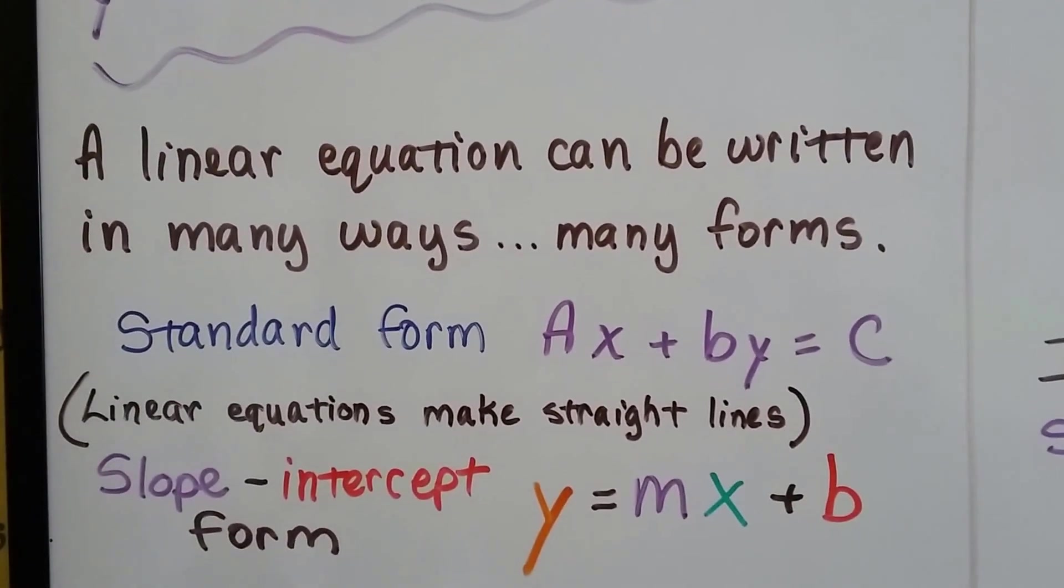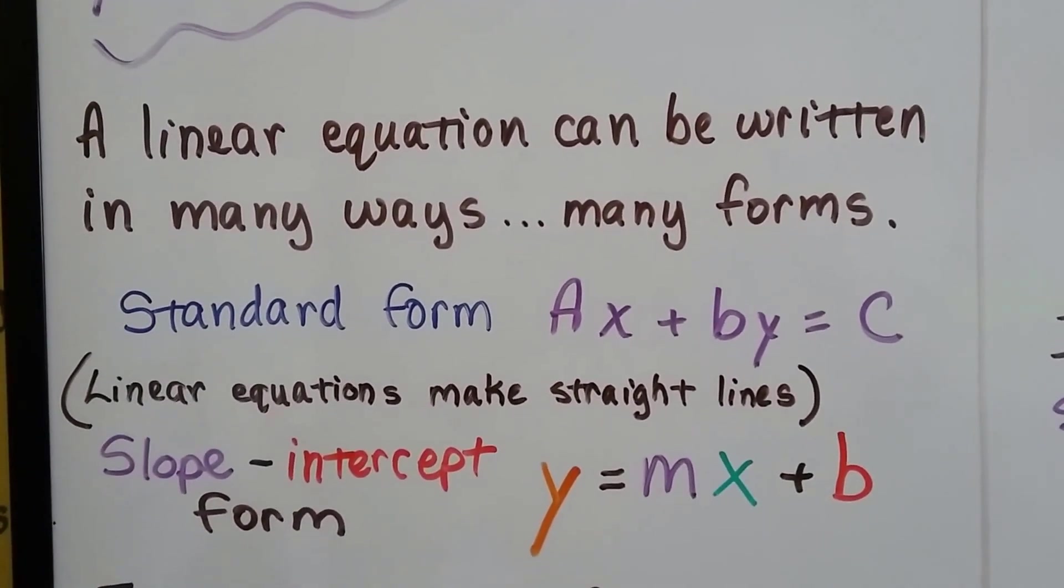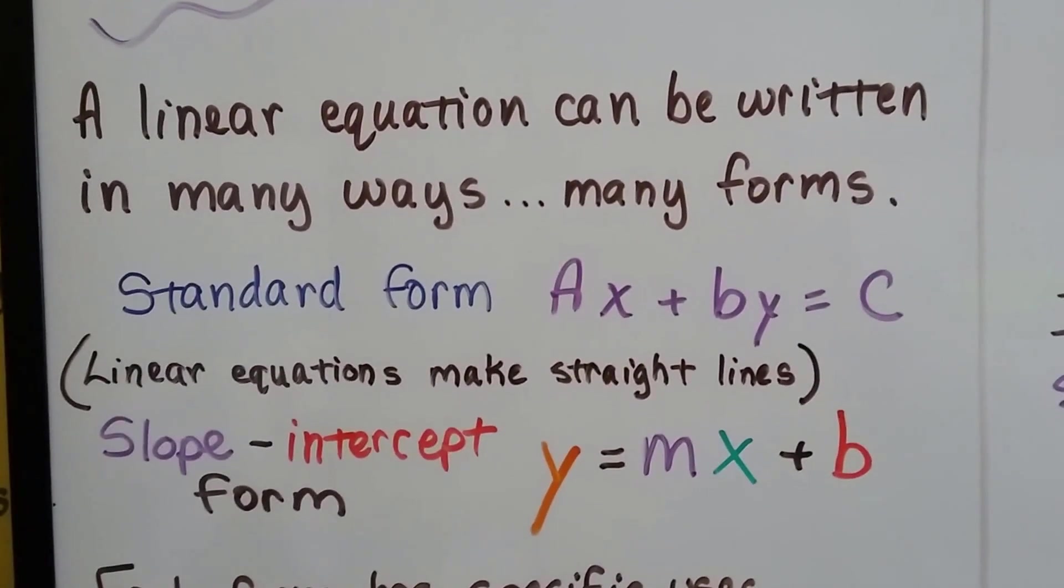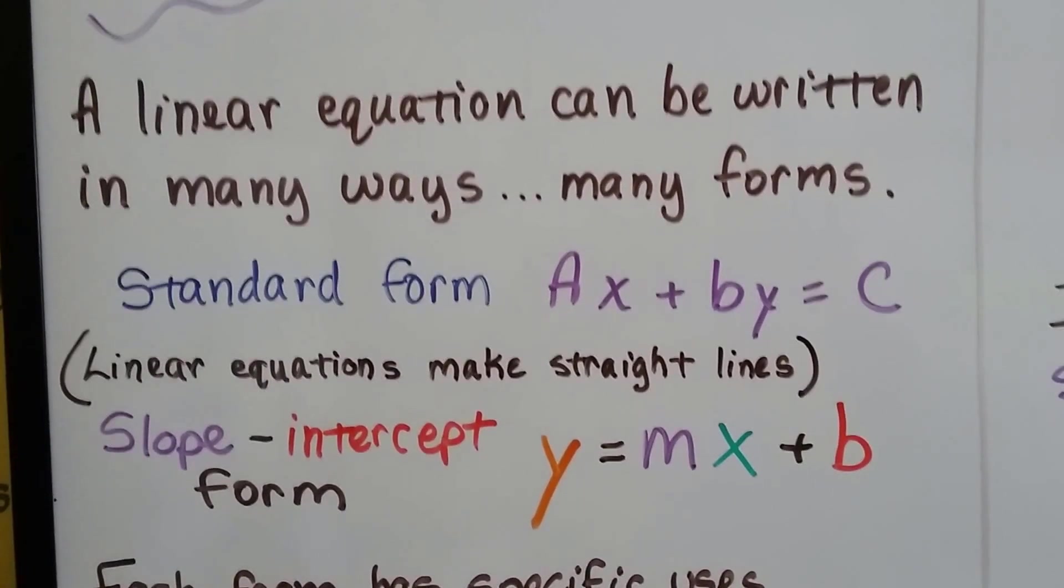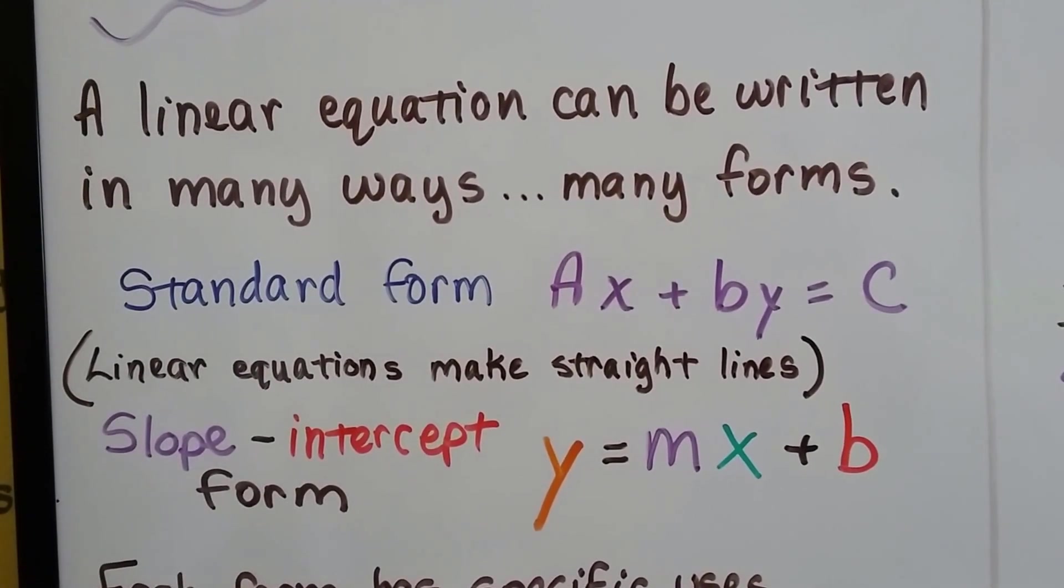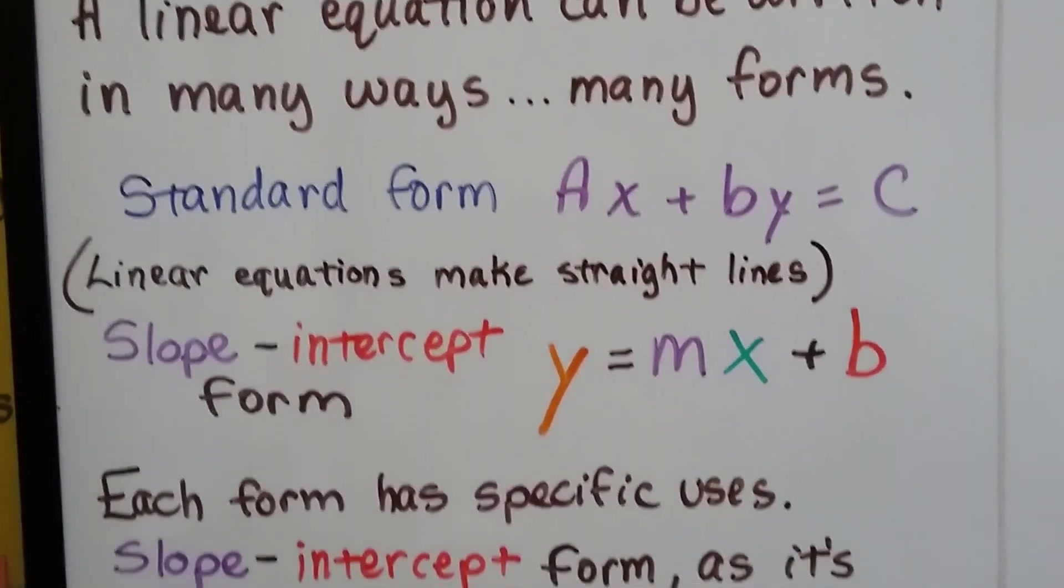We've learned about the standard form, ax plus by equals c. And now we're learning about slope-intercept form, that's y equals mx plus b. And just remember, linear equations make straight lines when they're graphed.